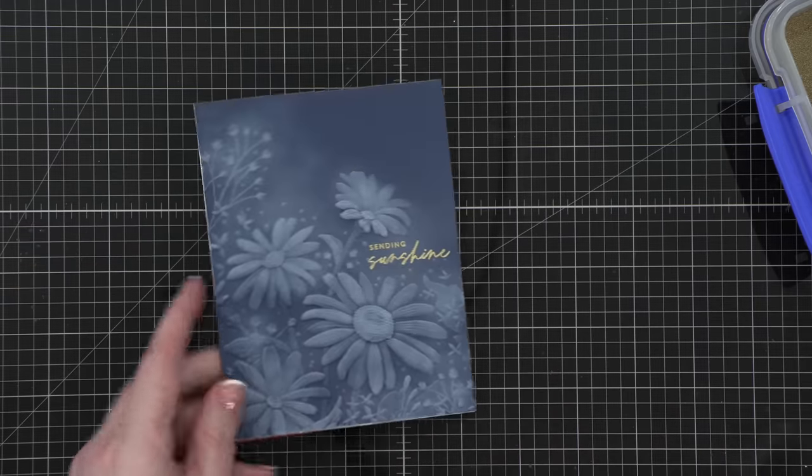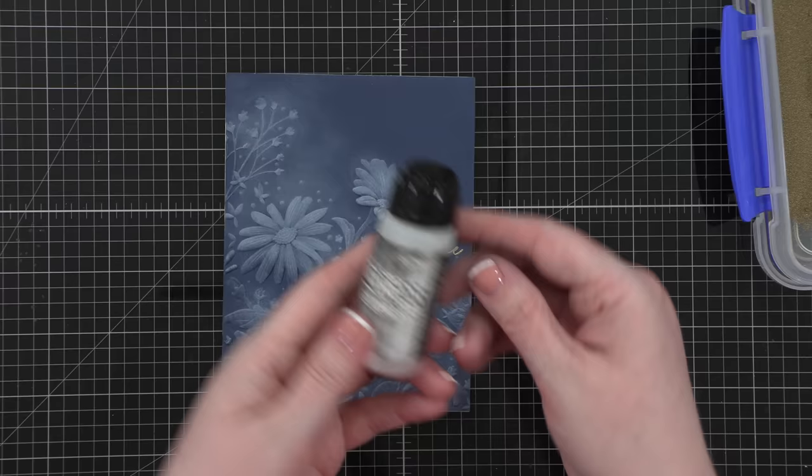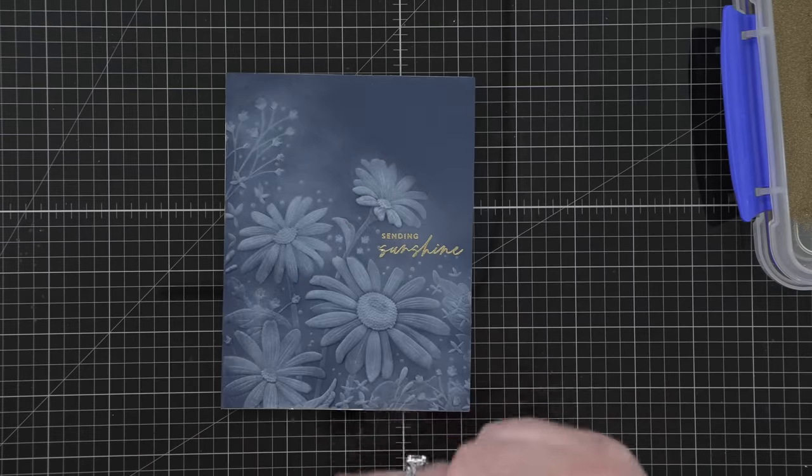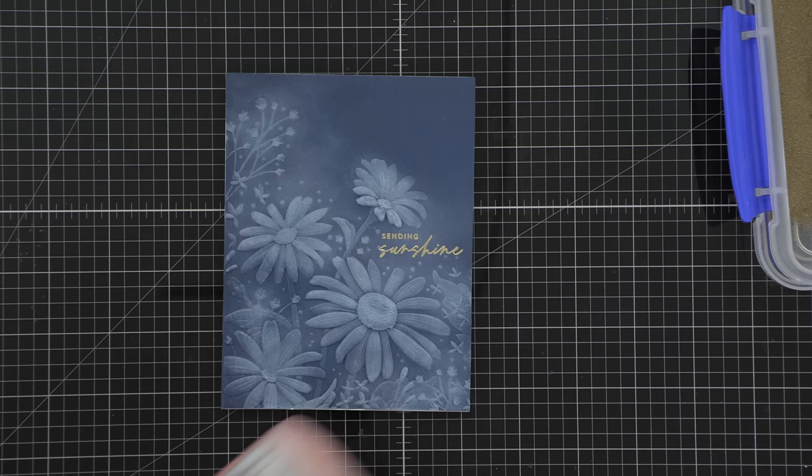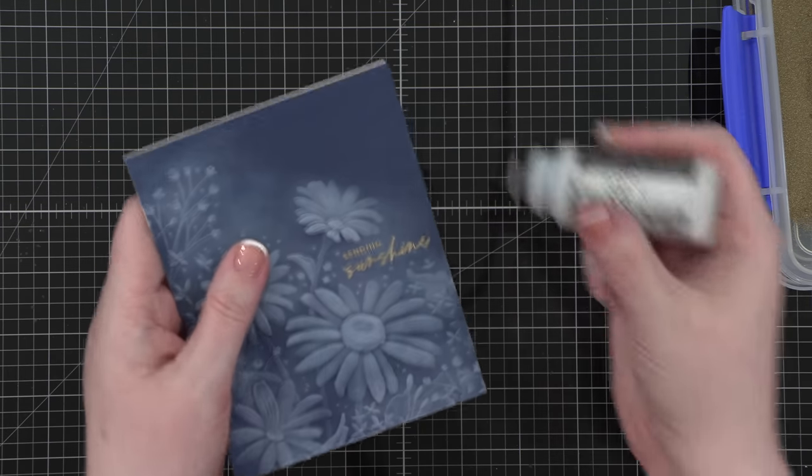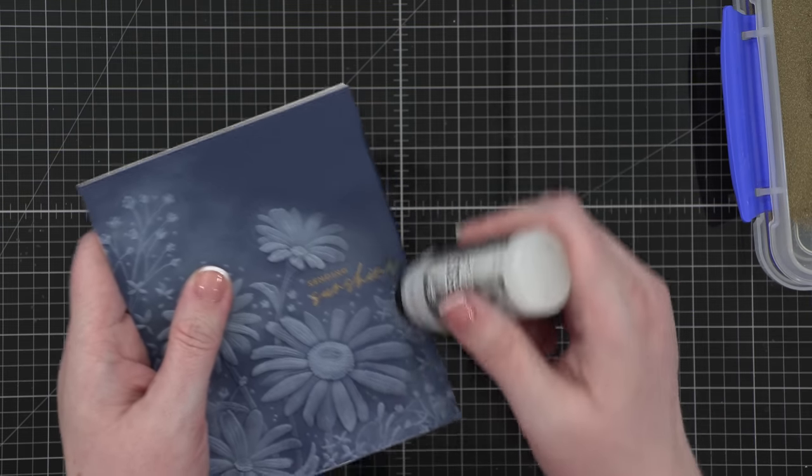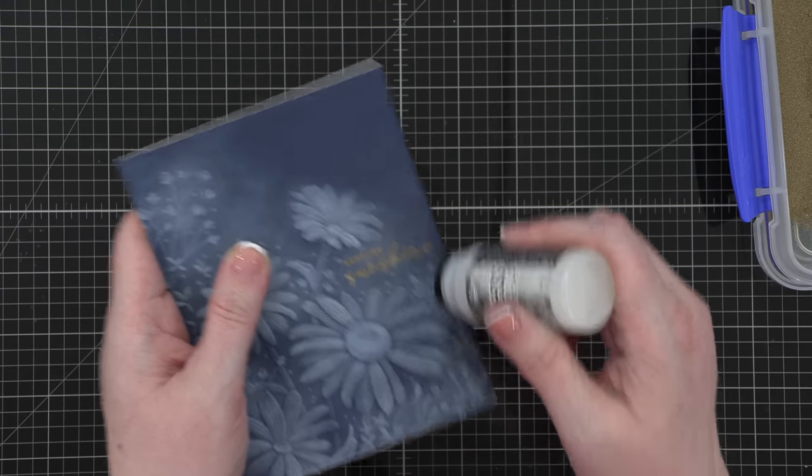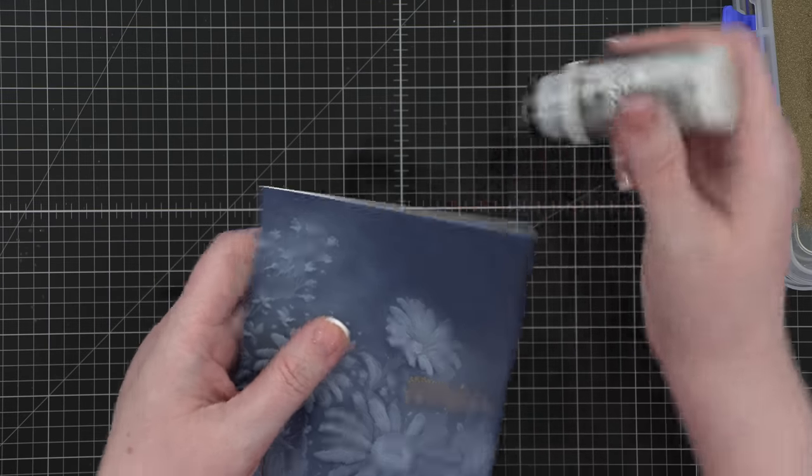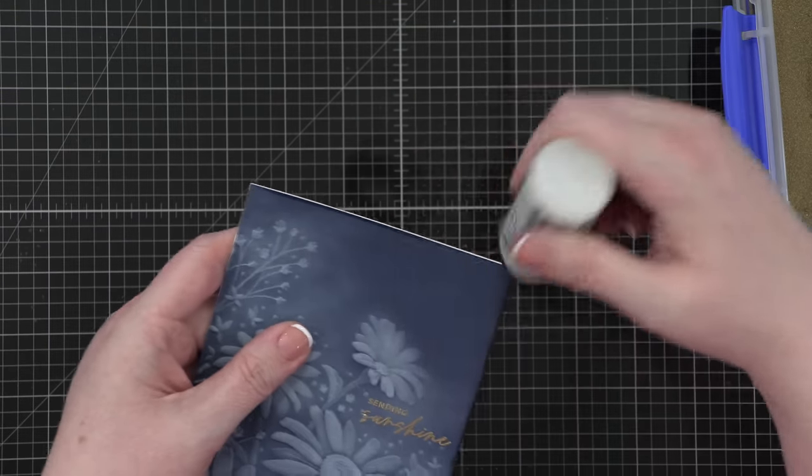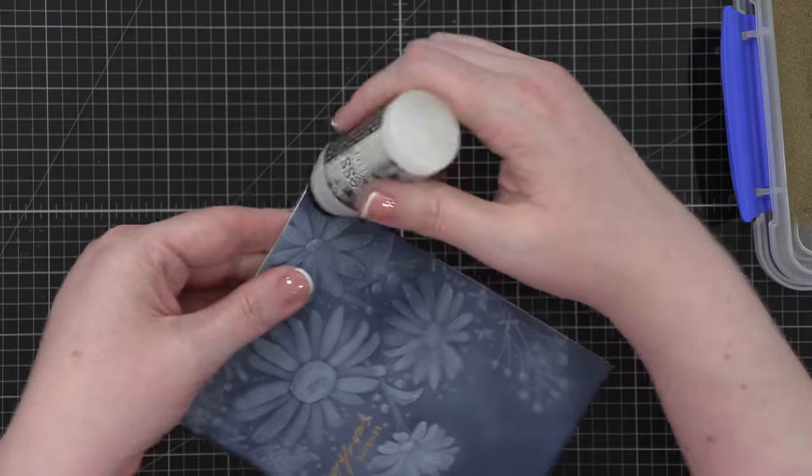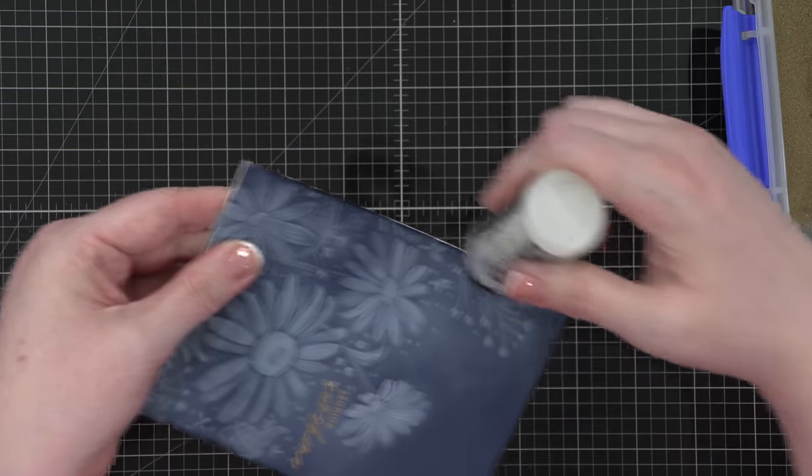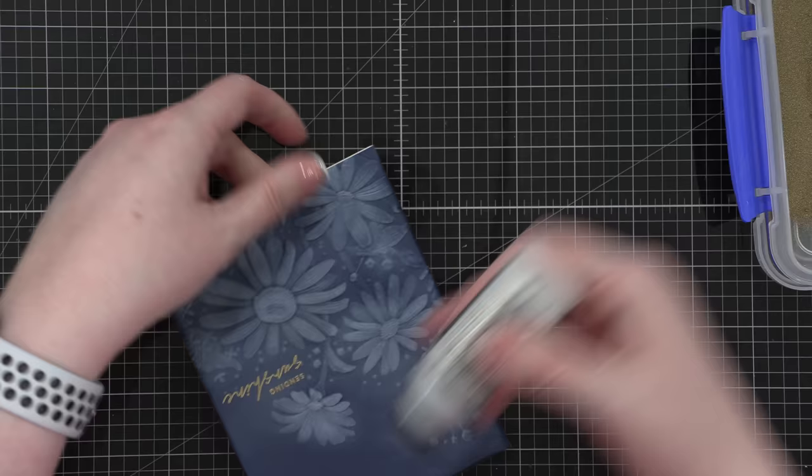Comes together really quick. Now to add an accent around the edge of the card, I'm going to use the distress embossing dauber. I have been sleeping on this product. I don't know why I haven't used it until now, because I love doing this technique. Usually I would use my VersaMark ink pad, the same ink I used for my greeting. But this is actually a little bit easier, and I can just dab on that embossing ink around the outer edges.